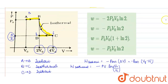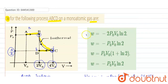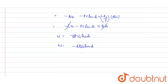The value of p_external when moving from B to C is 2p0, so the work done becomes minus 2p0V0 natural log 2. The correct answer is option one: minus 2p0V0 ln 2.